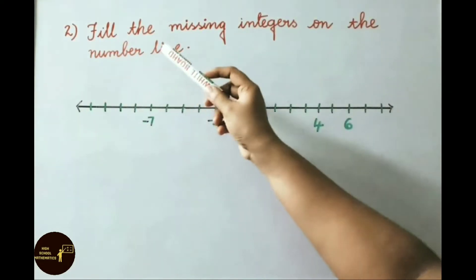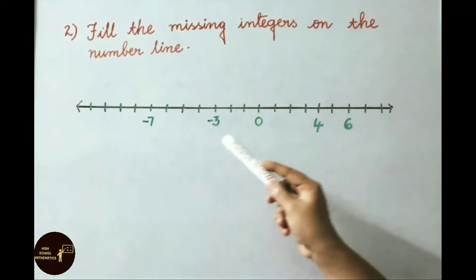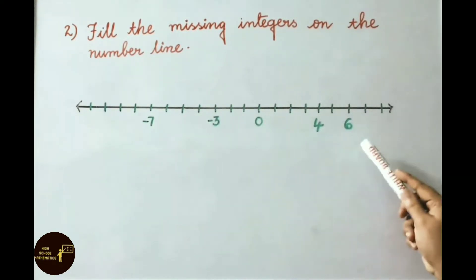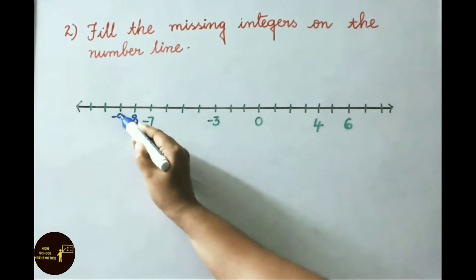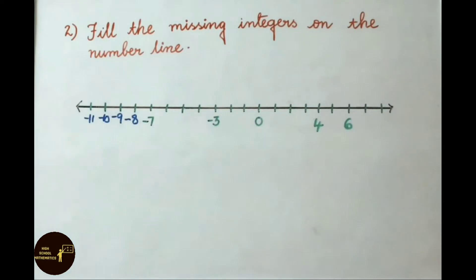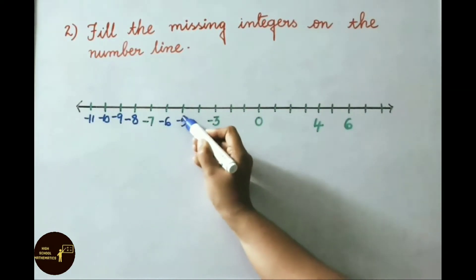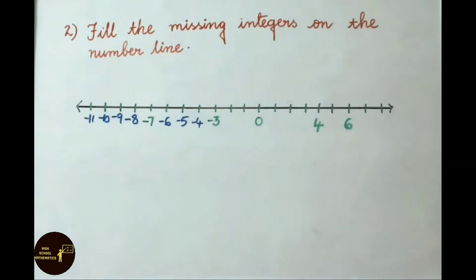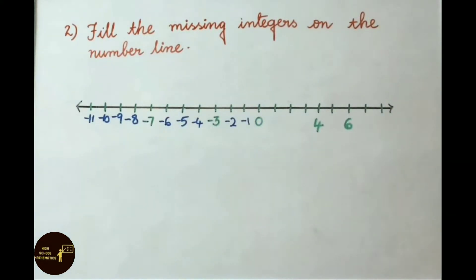Question 2: Fill the missing integers on the number line. The number line already has -7, -3, 0, 4, and 6 marked. We fill in the missing values: to the left of -7 we have -8, -9, -10, -11; between -7 and -3 we fill -6, -5, -4; and between -3 and 0 we fill -2, -1.